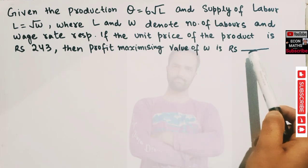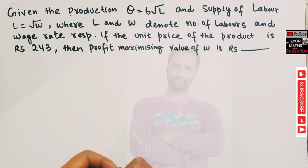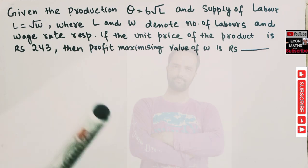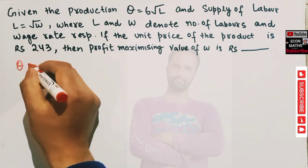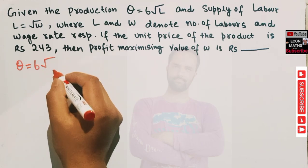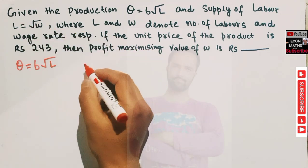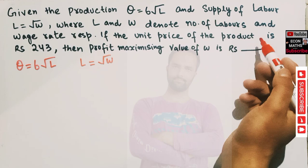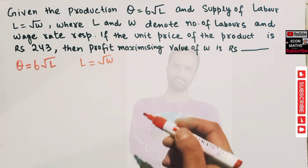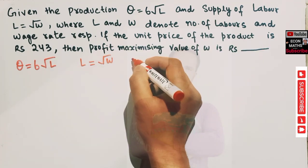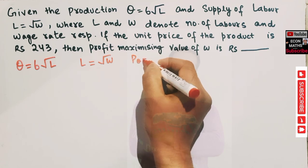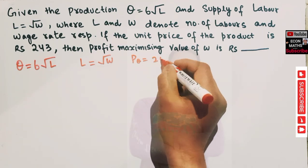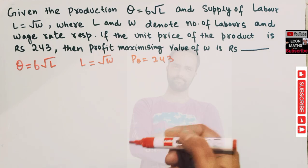We have to find the value of w. The information given: production function q = 6√L, supply of labor L = √w, and unit price of product P_q = 243.